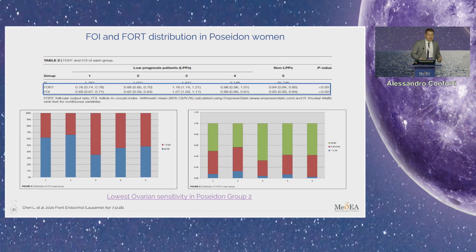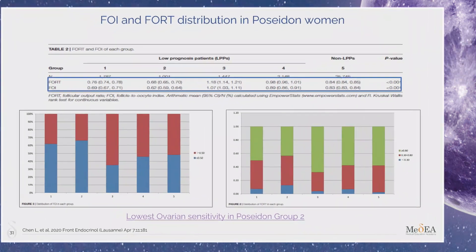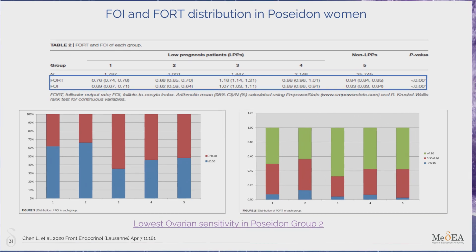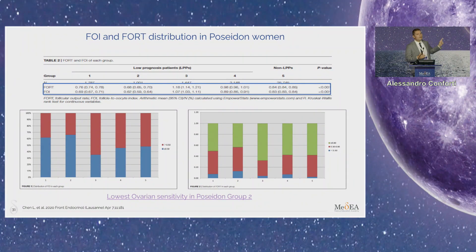The distribution of FORT and FOI in the Poseidon groups was recently explored, and it is clear that ovarian sensitivity — as measured by FORT and FOI — is reduced in Poseidon groups 1 and 2. It seems that Poseidon group 2 women, those with advanced reproductive age above 35 years old, show the lowest FORT and FOI, meaning it is more likely to identify a hyper-response profile in Poseidon group 2 compared with Poseidon group 1.